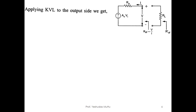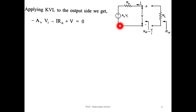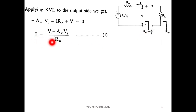Apply KVL at the output section. With the assumed current direction, the equation becomes: -i·Ro - Av·Vi + V = 0. From this, write the expression for i — call that equation one.